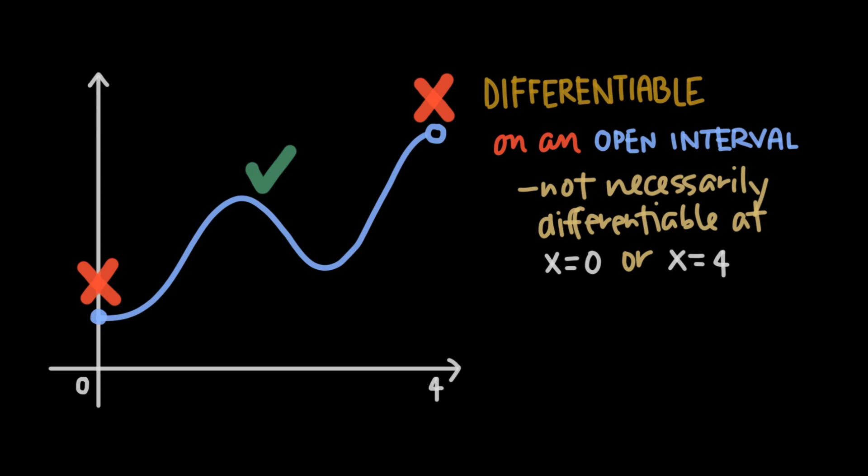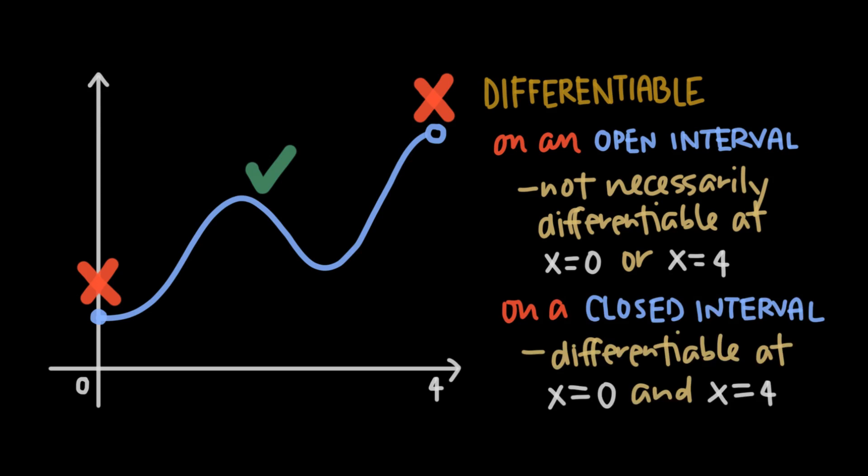If we say the curve is differentiable on the closed interval, it means we know it is differentiable everywhere in the interval, and that we tested the endpoints and it is differentiable at both endpoints too.